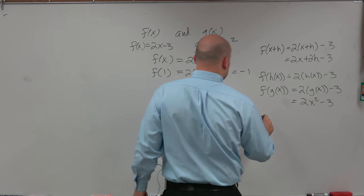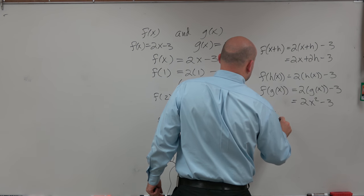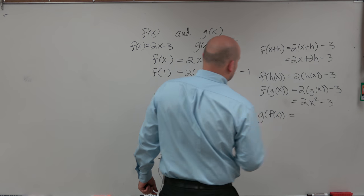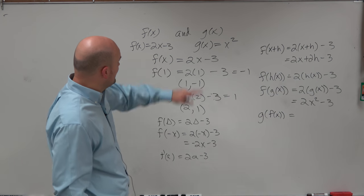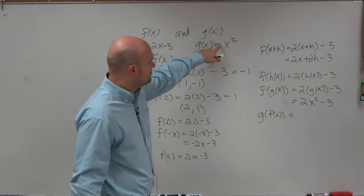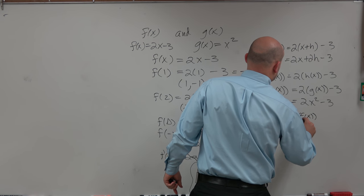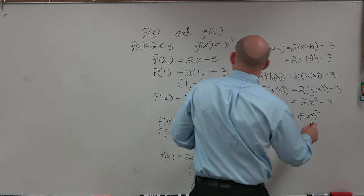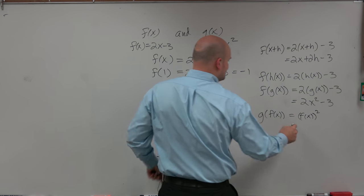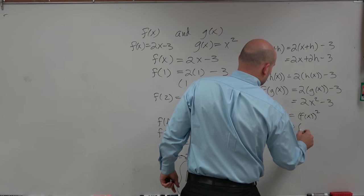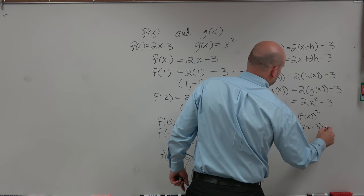Now composition can also work the other way. We can also take f of x and plug it into g of x. So to do that, I'm going to take my f of x function and plug it into g of x. So therefore, it's basically going to be f of x squared. Yeah, that's it, f of x squared. So therefore, that's going to be 2x minus 3 squared.